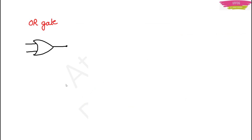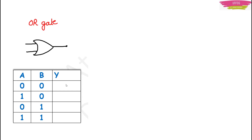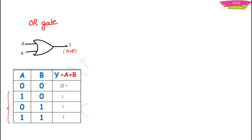Let's talk about the OR gate first. OR is nothing but addition in digital electronics. If you make a truth table with inputs A and B as 0,0 / 1,0 / 0,1 / 1,1, the output is A plus B. So: 0 plus 0 is 0; 1 plus 0 is 1; 0 plus 1 is 1; and if both inputs are 1, you add them and the output is high — that means 1. This is about the OR gate, and this is the symbol of the OR gate.